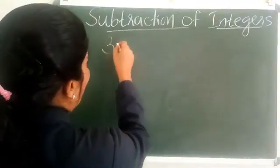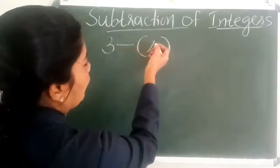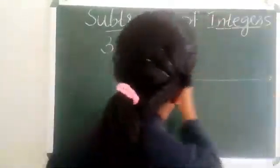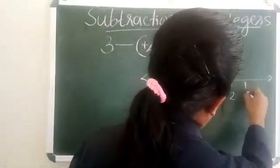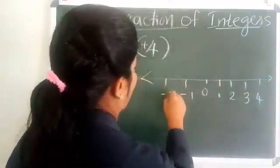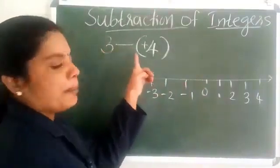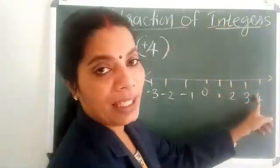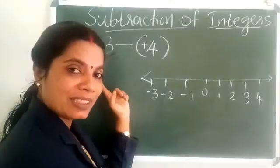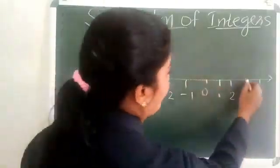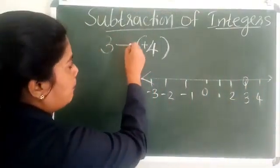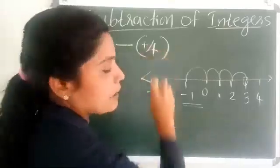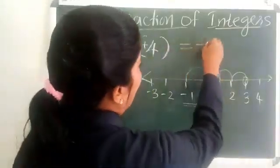Consider an example: 3 minus 4. Here, 4 is a positive integer. First, draw a number line with points including 1, 2, 3, 4 and minus 1, minus 2, minus 3. To add a positive integer we move to the right, but to subtract a positive integer we move to the left. Starting from 3, subtract positive 4 by moving 4 steps to the left. Here we get minus 1. That is, 3 minus 4 equals minus 1.